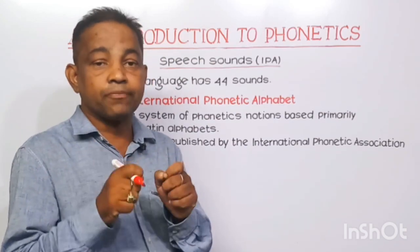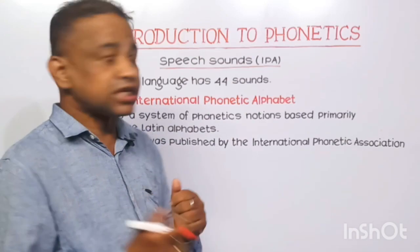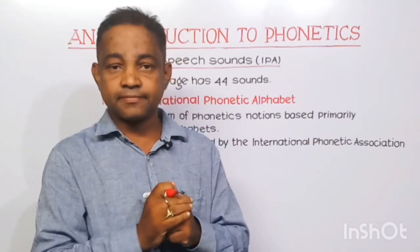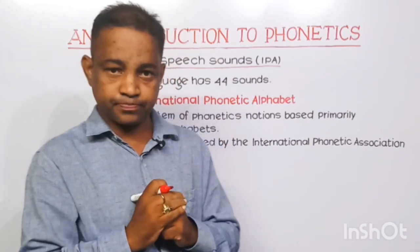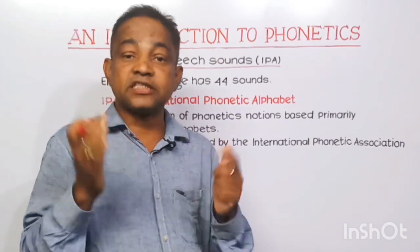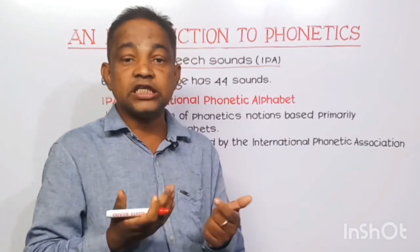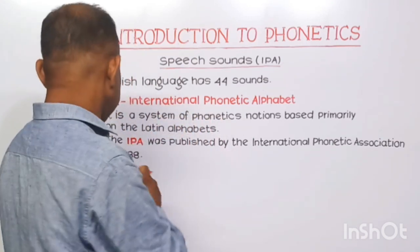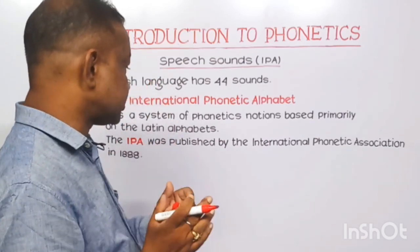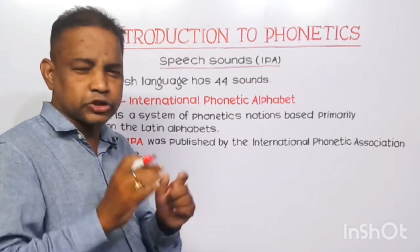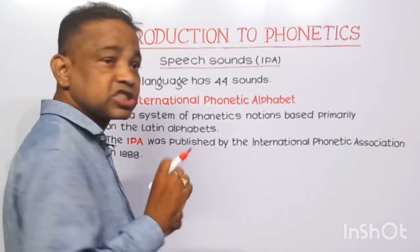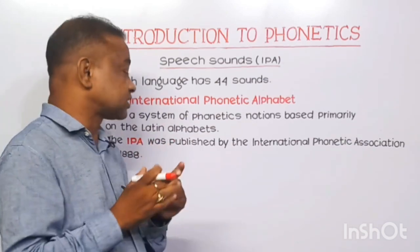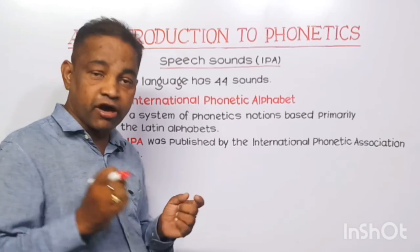Now we are going to discuss the third important point in this video — speech sounds. The English language has 26 alphabets, but it has 44 sounds. Those 44 sounds are the IPA symbols. IPA means International Phonetic Alphabets. It is a system of phonetic notation based primarily on the Latin alphabet. IPA symbols do not look like English alphabets; some new symbols will appear there. The IPA was established by the International Phonetic Association in 1888.